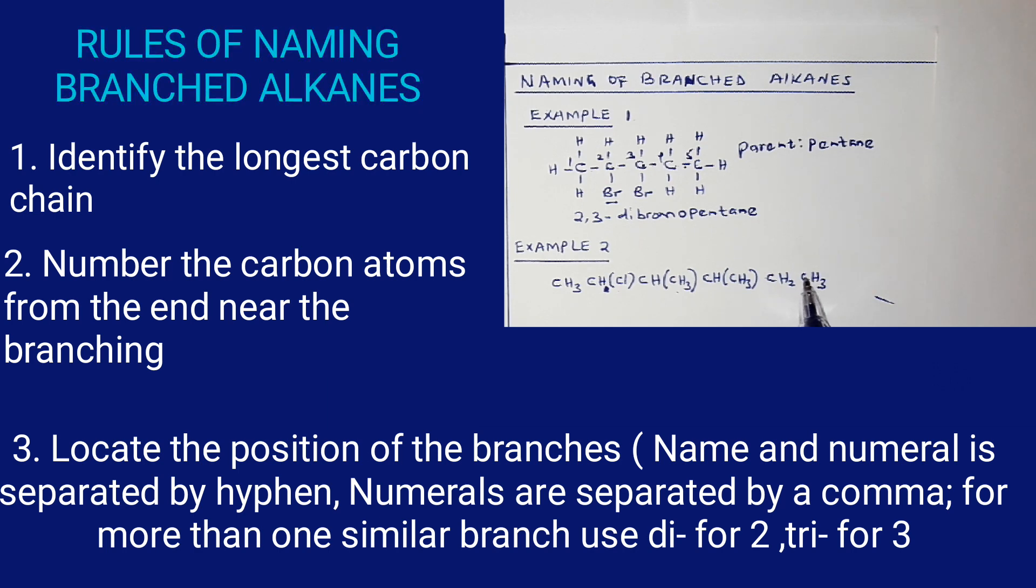Then number two: we look at numbering of the carbon atoms from the end near the branching. If I begin on the left hand side, this branch is at carbon number two. If I begin on the right hand side, it is one, two, three.